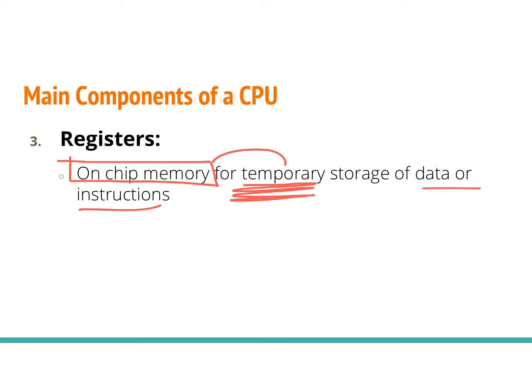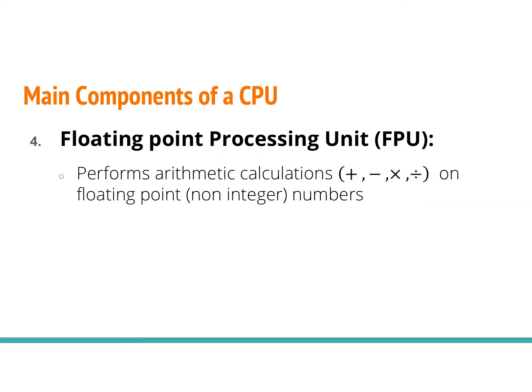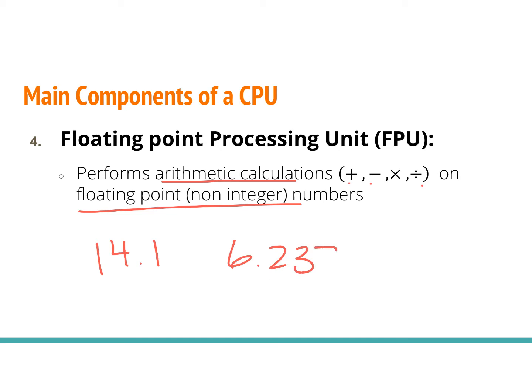The fourth component is the FPU, or floating point processing unit. It's very similar to the ALU, but what it does is perform arithmetic calculations — addition, subtraction, multiplication, and division — on floating point non-integer numbers. So numbers like 14.1, 6.2378, or negative 2.71 — numbers with decimal components — are processed by the FPU because the math behind them is a little bit different.